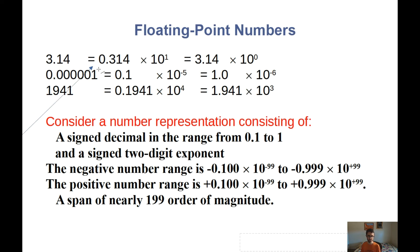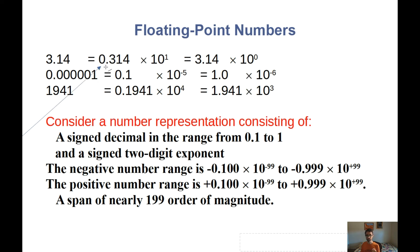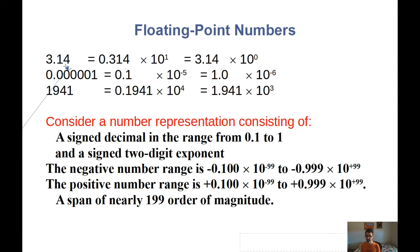So for 3.14, we start with the decimal place to the left of the first non-zero digit — 0.314 — and multiply by 10 raised to the first power to get 3.14. For the number with five zeros and then a 1, we take 0.1 and multiply by 10 to the negative 5th. For 1941, we multiply 0.1941 by 10 to the 4th. In this way, we only store two things in memory: the relevant digits after the decimal place, and the value of the exponent.